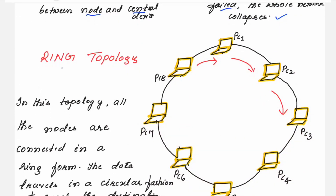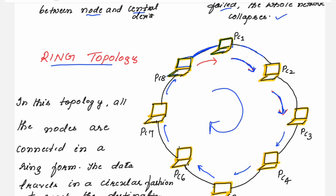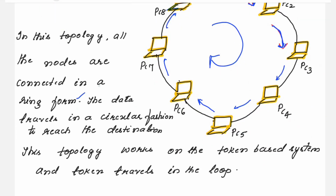The next one is ring topology. In ring topology, the data flows in a clockwise direction from one node to the next. For example, if PC1 wants to send data to PC8, even though PC8 is placed adjacent to PC1, the data has to travel from PC1 to PC2, then PC3, PC4, PC5, PC6, PC7, and finally to PC8. You can see here that all the nodes are connected in a ring form, and the data travels in a circular fashion to reach the destination.